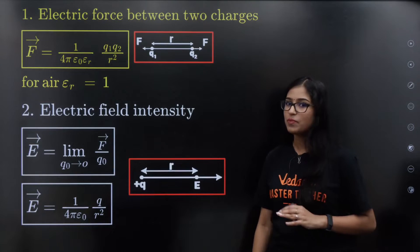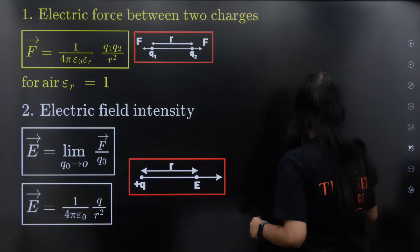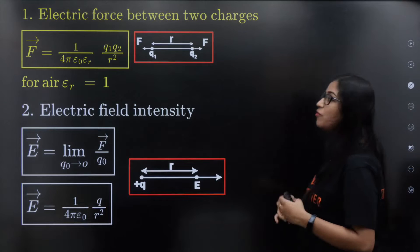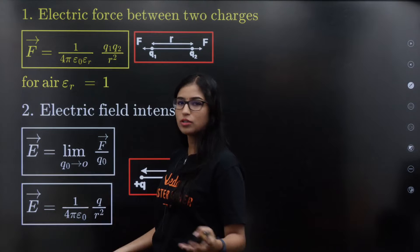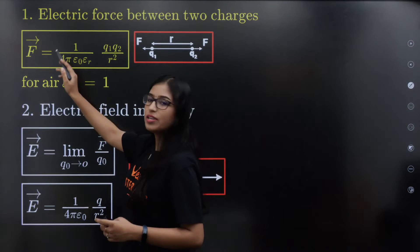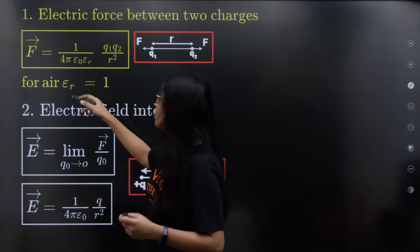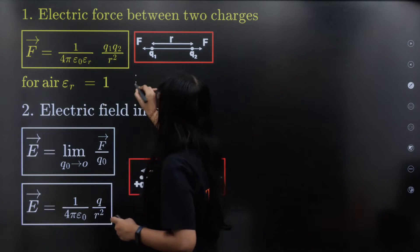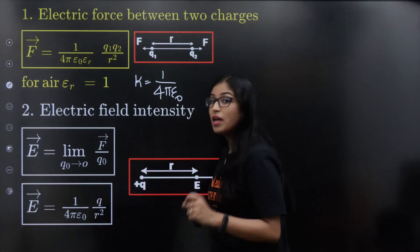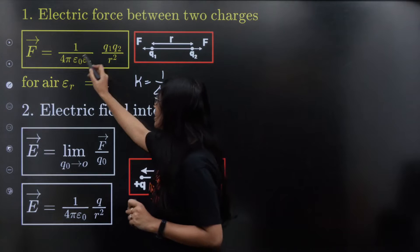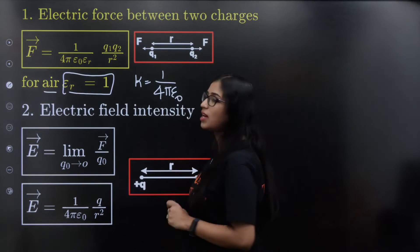First formula: Electric force between two charges — we call it Coulombian force. F is equal to KQ1Q2 divided by R squared. K's complete value is 1 by 4 by epsilon naught. Epsilon R we are taking as 1, because this is a rare medium — that's why we are using epsilon naught.